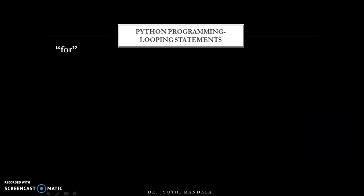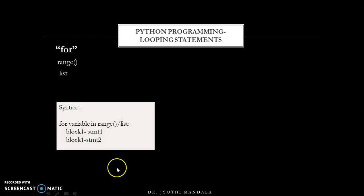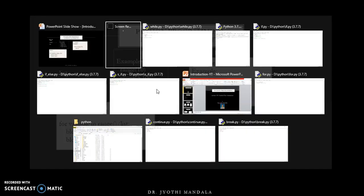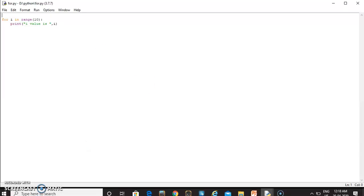The second type of looping statement is for. For will also execute the block of statements a certain number of times depending on the condition given. The syntax requires specifying a variable and the number of times to execute, specified by a range. The i value can be taken from the range or from a list. By default, if you give a range the value will be incremented by 1. Range can be used in three ways: with 1, 2, or 3 parameters.